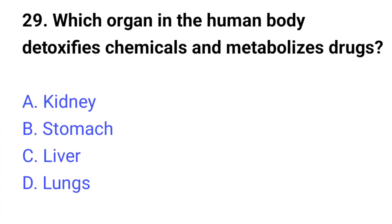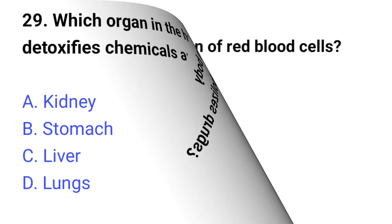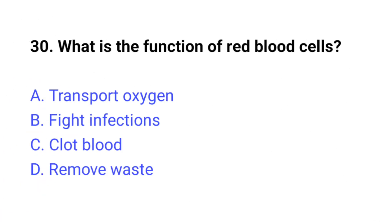Question number twenty-nine: which organ in the human body detoxifies chemicals and metabolizes drugs? The right answer is option C, liver. Question number thirty: what is the function of red blood cells? The right answer is option A, transport oxygen.